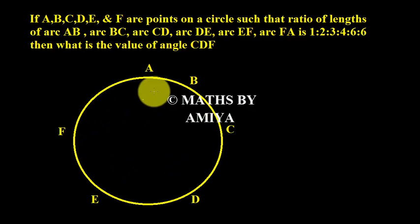First of all we need to plot these points on a circle. So this is our circle and we plotted all six points. The length of arc AB is x, then BC is 2x, CD is 3x, DE is 4x, EF is 6x, and FA is 6x.